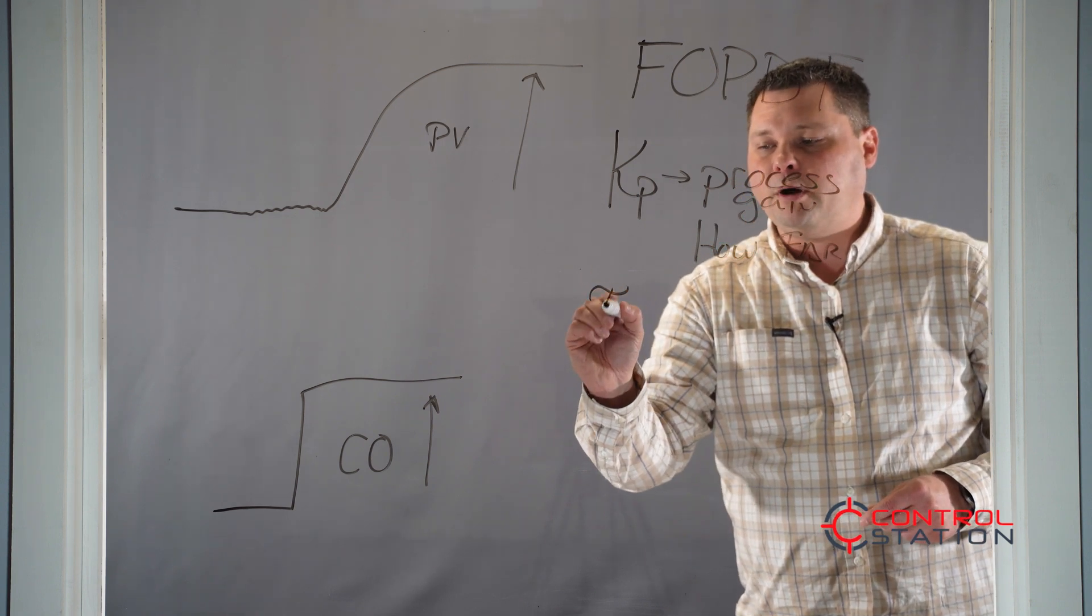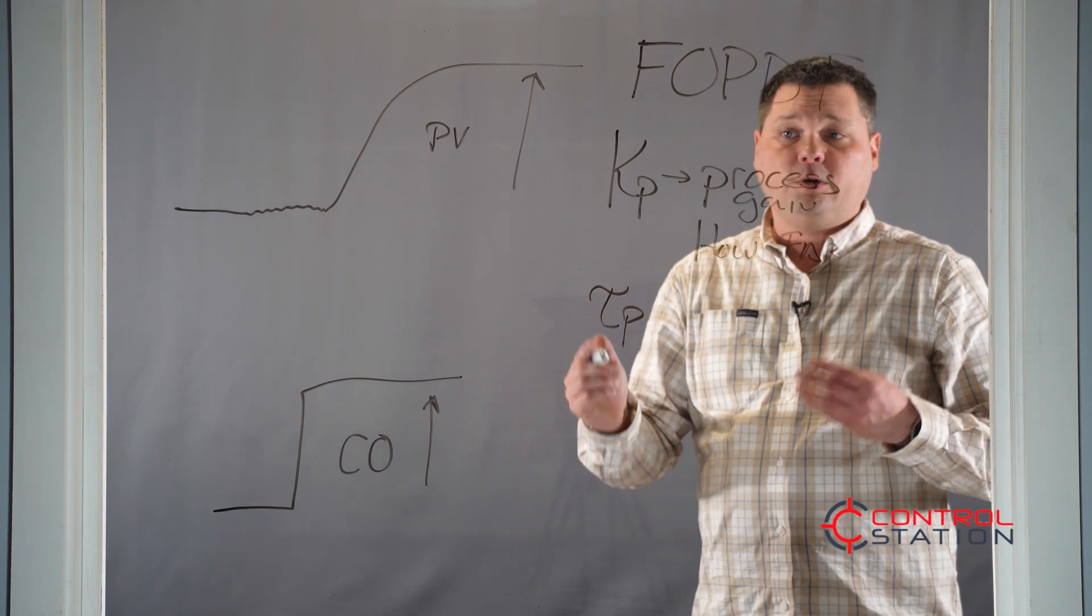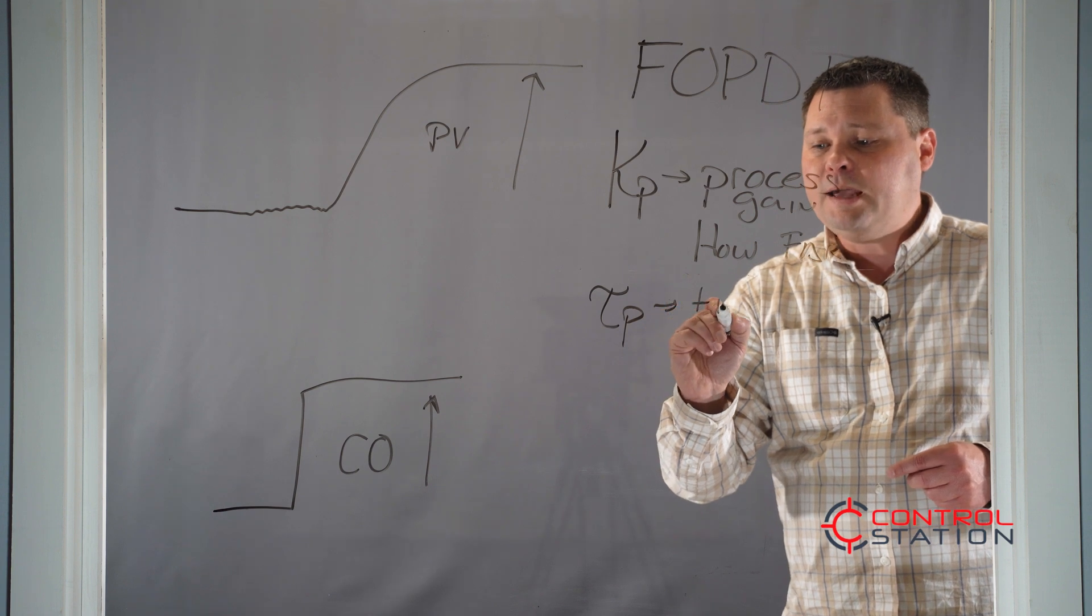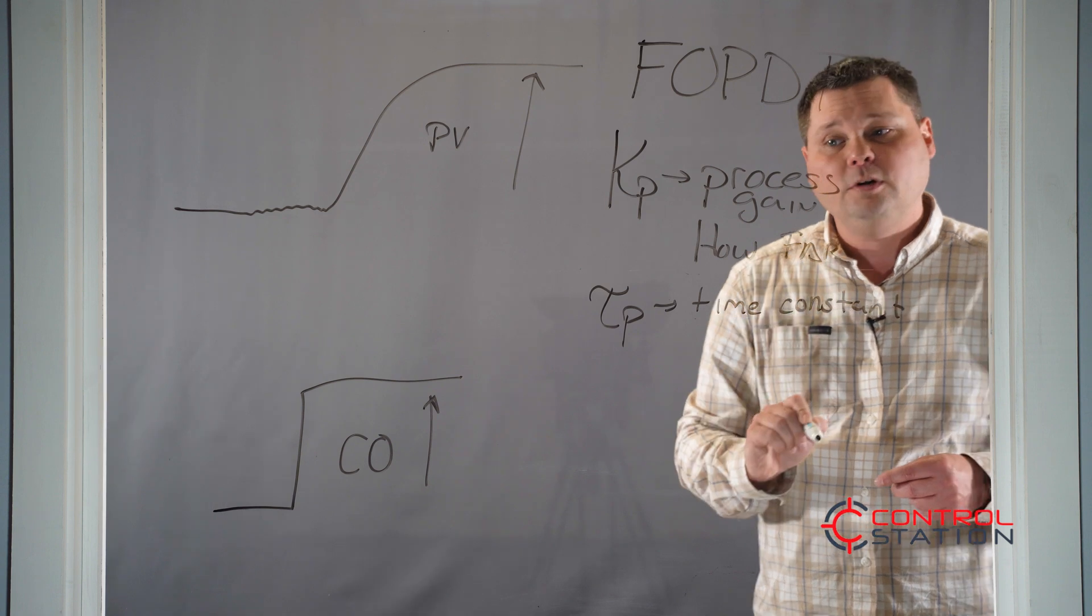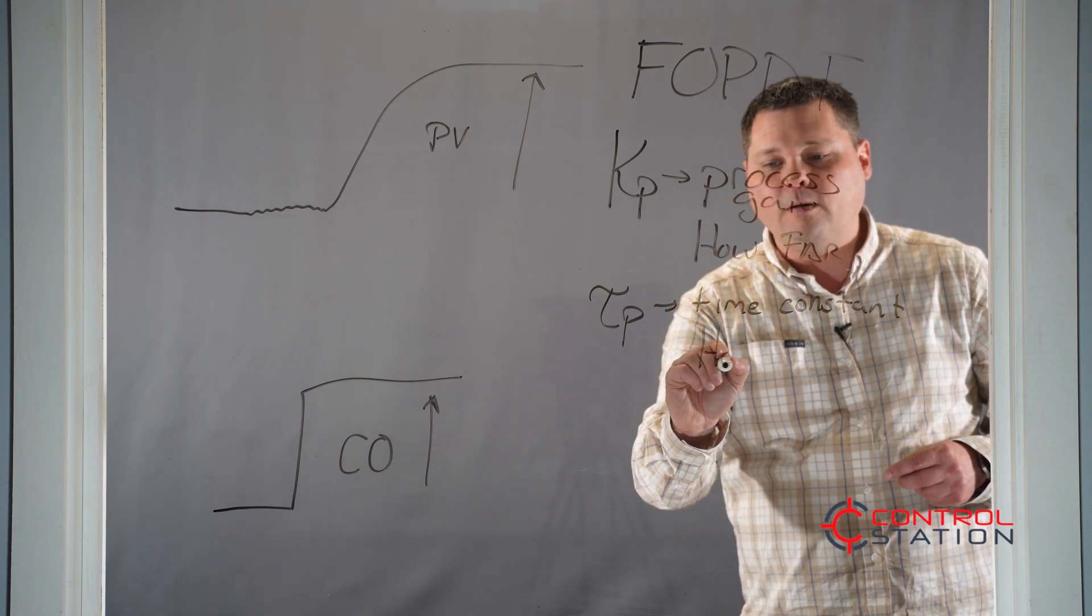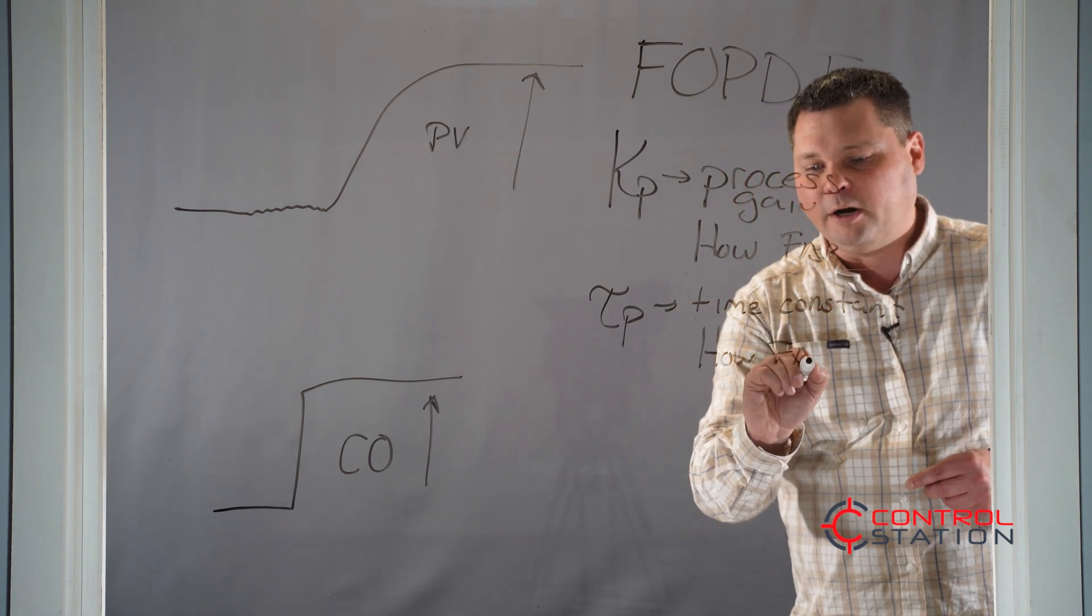The next parameter is called the time constant or tau P. The time constant is related to the speed of the system or how fast does it move. So this is going to be our how fast variable.